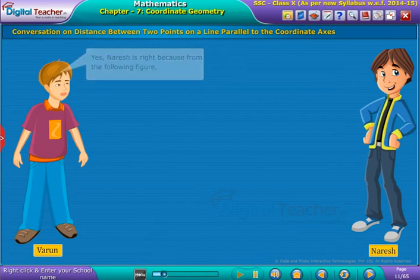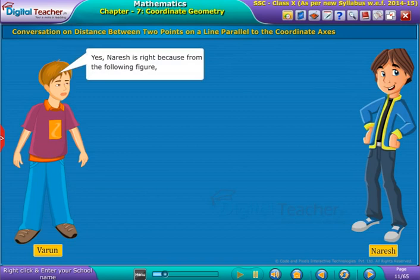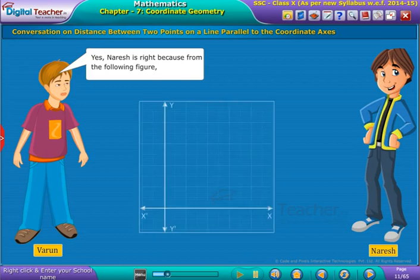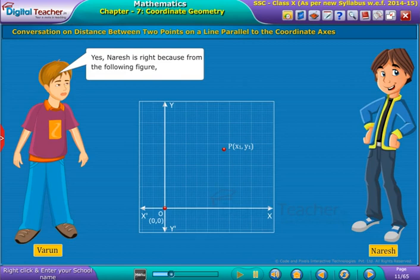Why? Varun. Yes, Naresh is right because from the following figure, represent the points P(x1, y1) and O(0, 0) on coordinate axes.